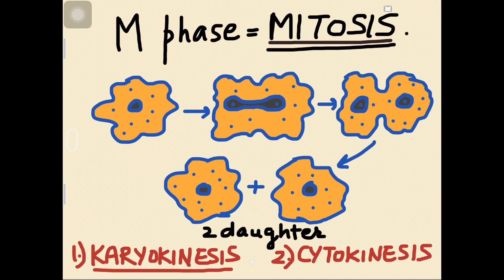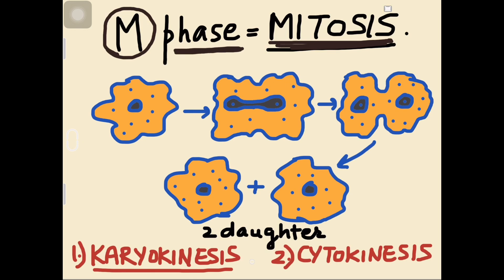Mitosis cell division represents the M phase, which is very short. In human beings it is only of 1 hour duration on an average.